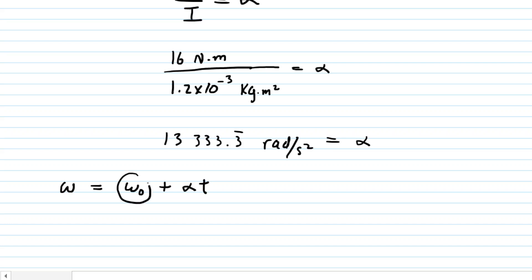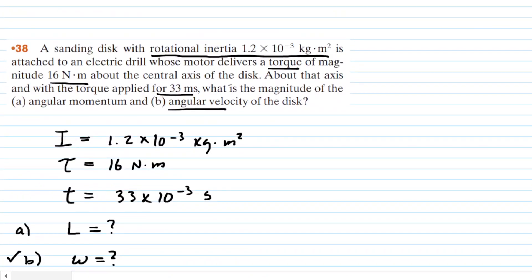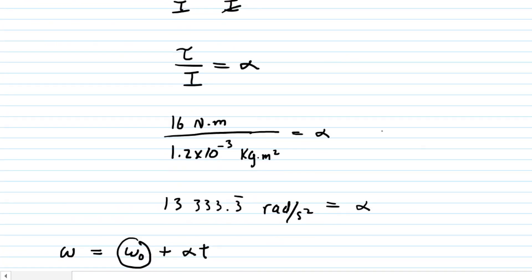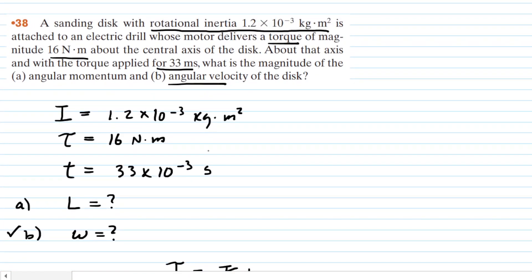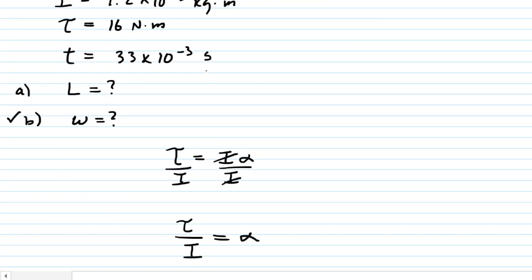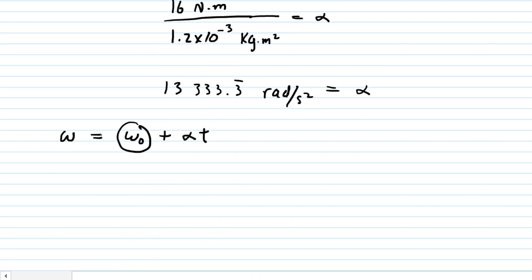Regarding the initial angular velocity, if we read the question carefully, we can see that the disk was never stated to have any initial angular velocity. We can assume it starts from rest, and therefore the initial angular velocity is zero. So the equation reduces to the following.